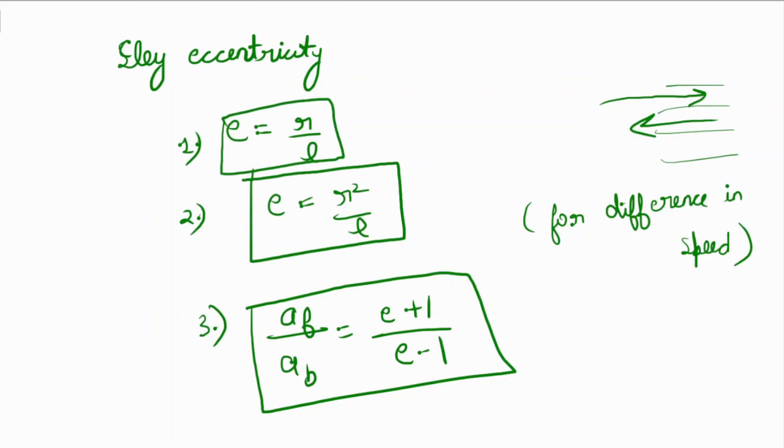This is the simple formula. Let's see a numerical example. Suppose it is given that the radius of the crank shaft is 10 centimeters, the length of the connecting rod is 40 centimeters. To calculate the slay centricity, directly apply r upon l: 10 upon 40, which equals 0.25.